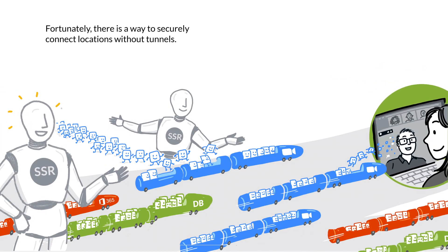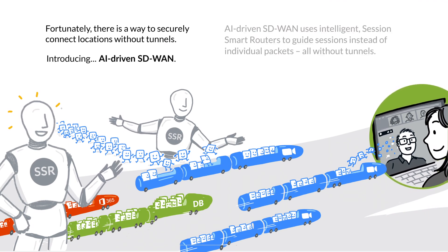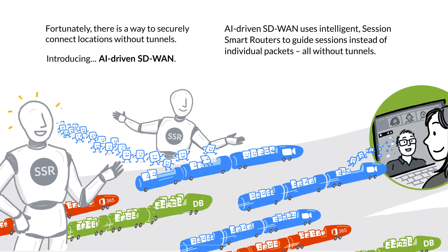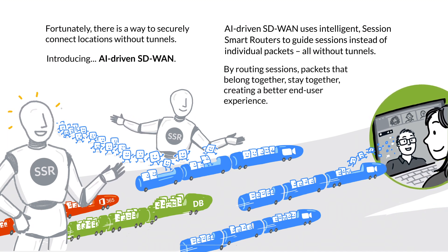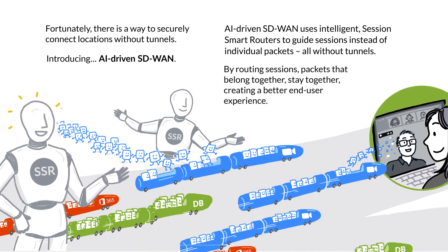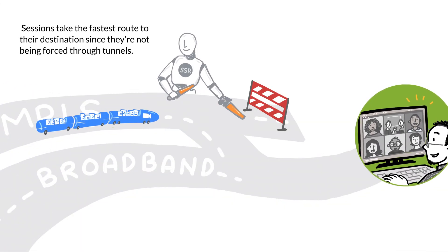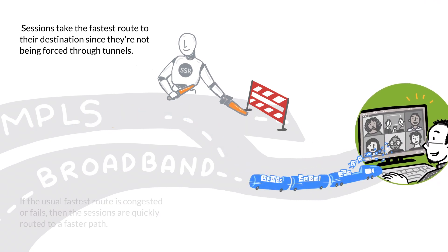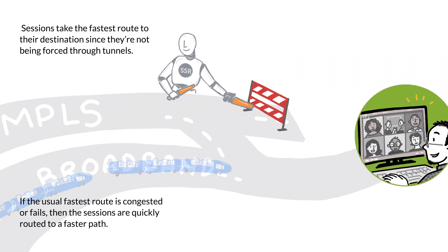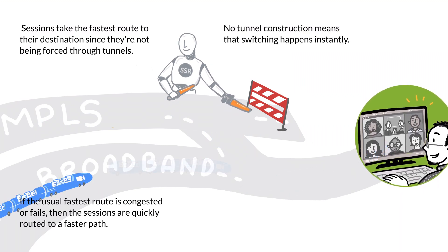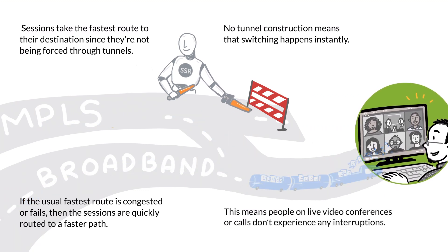Fortunately, there is a way to securely connect locations without tunnels. Introducing AI-Driven SD-WAN. AI-Driven SD-WAN uses intelligent session smart routers to guide sessions instead of individual packets, all without tunnels. By routing sessions, packets that belong together stay together, creating a better end user experience. Sessions take the fastest route to their destination since they are not being forced through tunnels. If the usual fastest route is congested or fails, the sessions are quickly routed to a faster path. No tunnel construction means that switching happens instantly, so people on live video conferences or calls won't experience any interruptions.